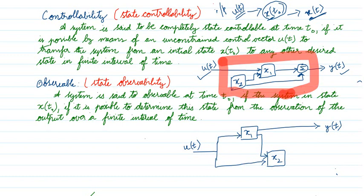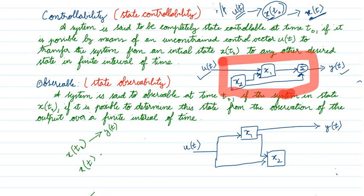Now come to observability. A system is said to be observable at time t₀ if, when the system is in state x(t₀), it is possible to determine this state from the observation of the output over a finite interval of time. Simply put: I have states, and I can observe them at the output. States are controllable by the input; states are observed by the output. Control is by the input, observation is by the output.